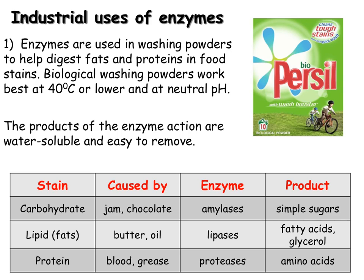The first industrial use is how enzymes can be used in washing powders. Some washing powders carry the 'bio' name — there are both biological and non-biological washing powders. Biological washing powders contain enzymes that help digest fats and proteins in food stains, breaking down large molecules into smaller water-soluble molecules that wash out with the water. Non-biological washing powders contain chemicals such as detergents that break up stains in a similar way. Biological washing powders work best at 40°C or lower and at a neutral pH, because higher temperatures or extreme pH will cause the enzymes to denature.